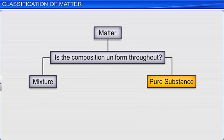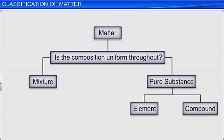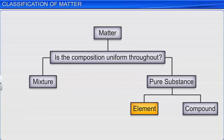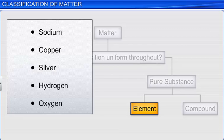Pure substances can be further classified into elements and compounds based on separation of it into its respective constituents. Substances which consist of only one kind of atoms are called elements. Examples of elements are sodium, copper, silver, hydrogen, oxygen, etc.